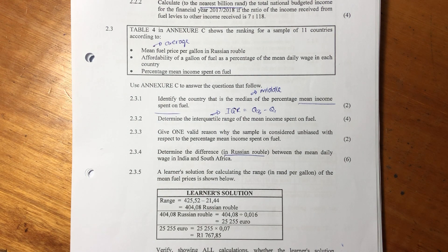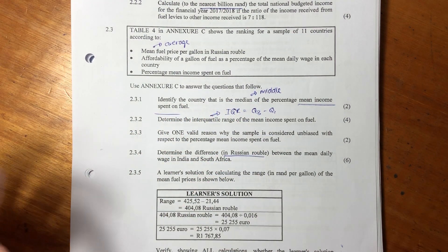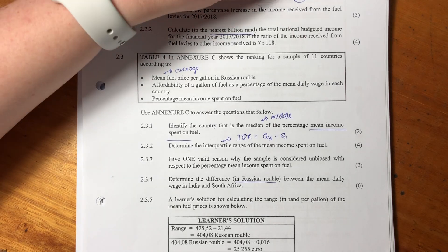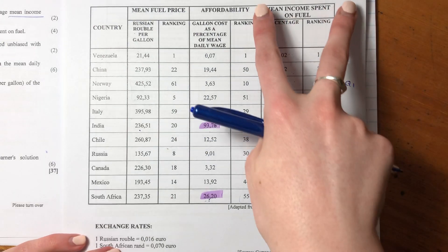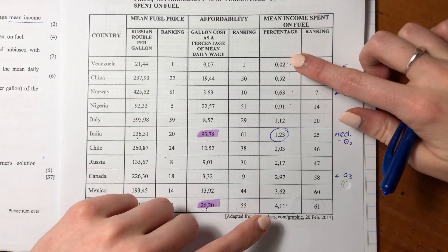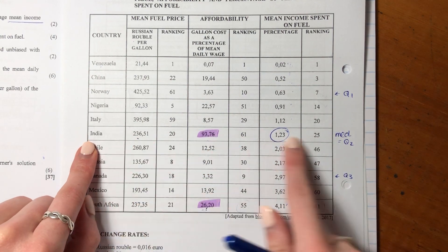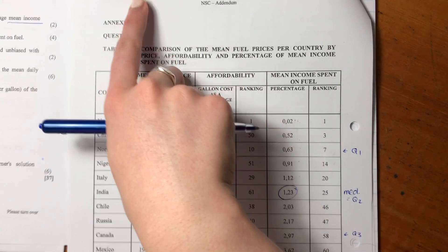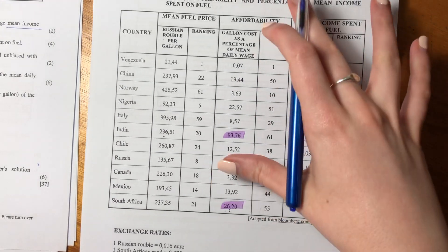Let's now go to our questions. 2.3.1 says identify the country that is the median of the percentage mean income spent on fuel. We know that median means middle, and in order to find the middle, we have to order the data from smallest to biggest. So we're sitting in this column because we're talking about the mean income spent on fuel, and we're going to find what is the middle. So we go 1, 2, 3, 4, 5. The middle is India. So India is the median of that specific data set.